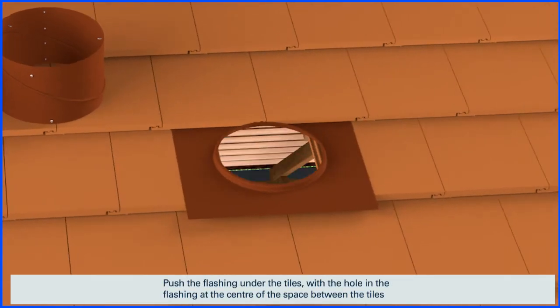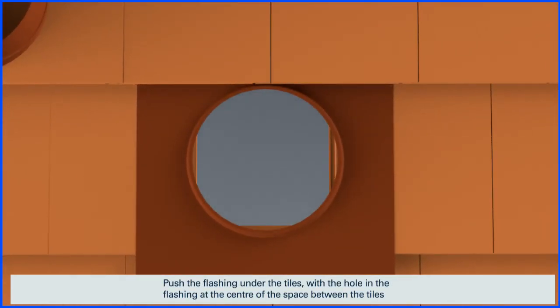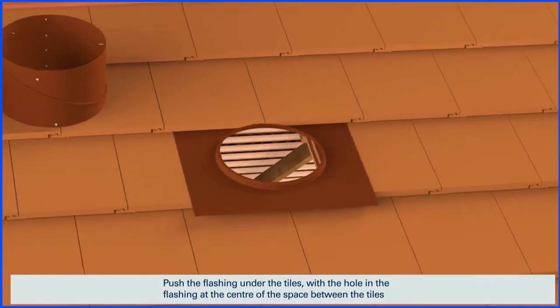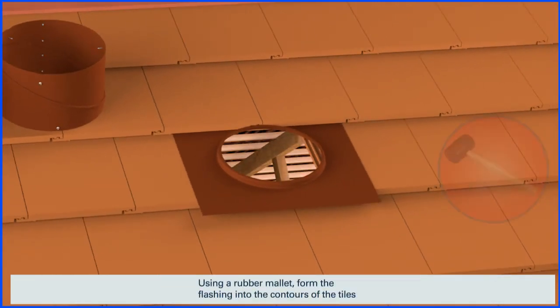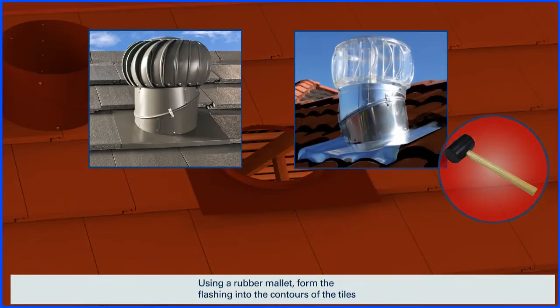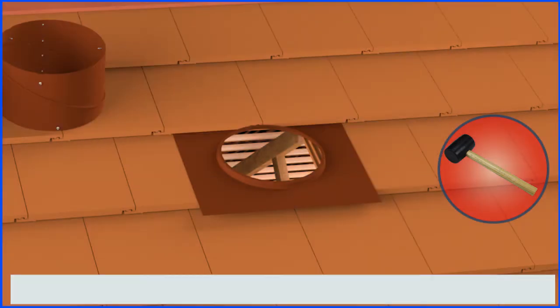Push the flashing under the tiles with the hole in the flashing at the centre of the space between the tiles. Using a rubber mallet, form the flashing into the contours of the tiles. Then form the front of the flashing over the edge of the tiles.